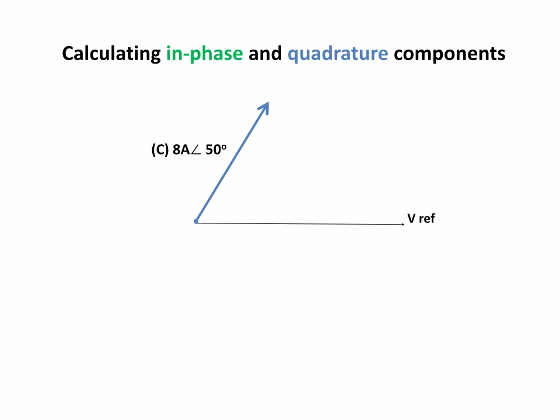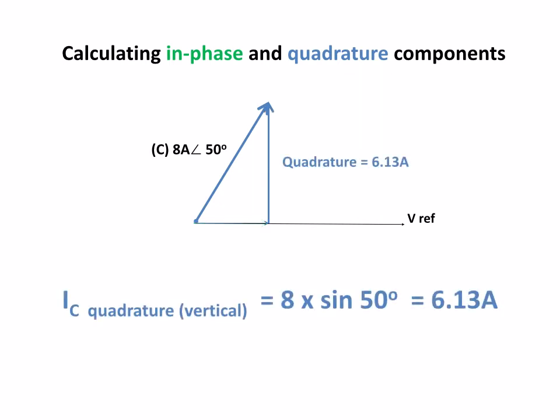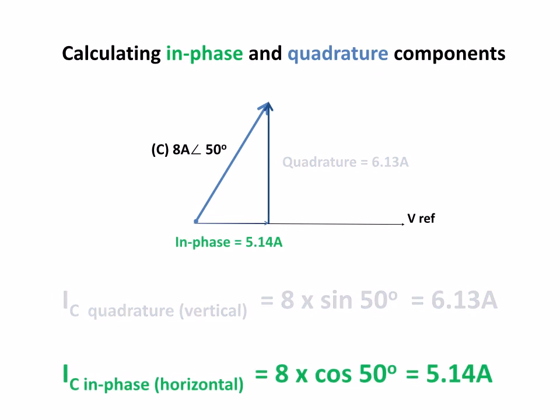The 8 amps at 50 degrees, now this is going to have both an in-phase component and a quadrature component. The quadrature is going to be 8 times the sine of 50 and it's going to give us 6.13 amps, and our in-phase is going to be 8 times the cosine of 50 to give us 5.14 amps. So that phasor has two components.